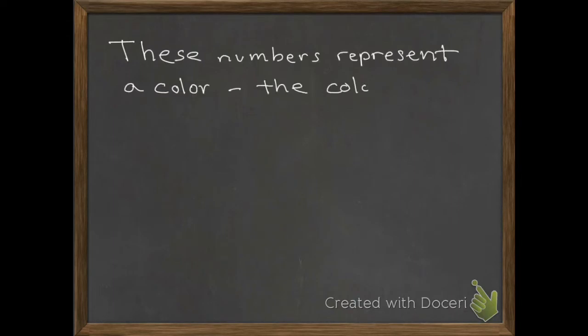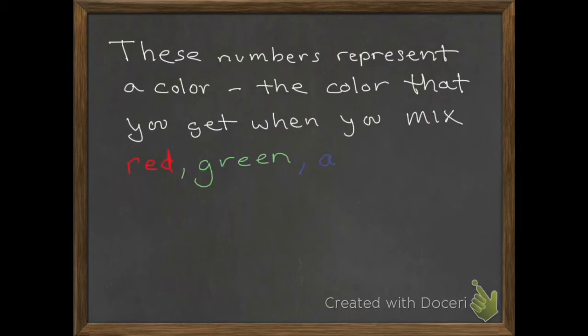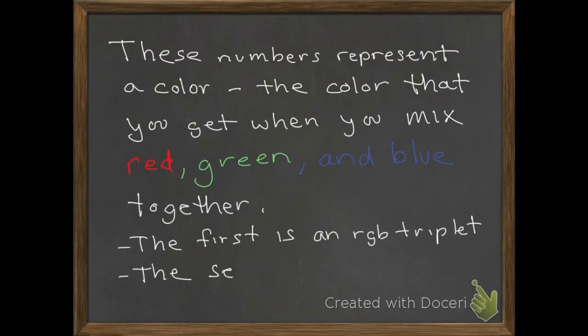These numbers represent colours, the colours that you get when you mix red, green and blue together. The first was an RGB triplet with three numbers, and the second is in the hexadecimal format.